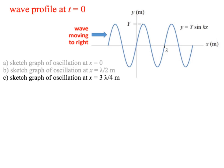For part c, we want the graph of the oscillation at the point on the wave where x equals 3 lambda over 4, so 3 quarters of a wavelength along, so about here. Go through the same process.